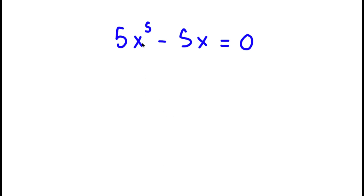In this problem, I have 5x to the power of 5 minus 5x is equal to 0. To solve this problem, I'm going to first start by factoring out 5 from 5x to the power of 5 minus 5x.